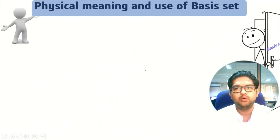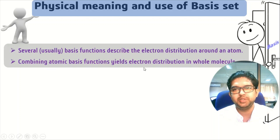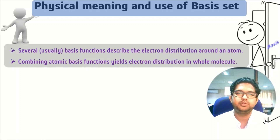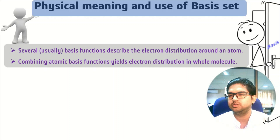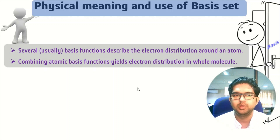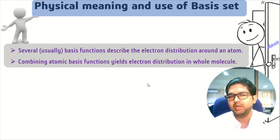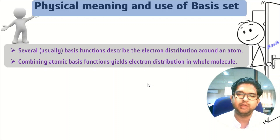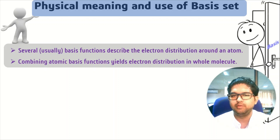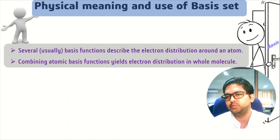The physical meaning of the basis set is that basis functions describe the electron density around an atom. By combining these atomic basis functions, we can describe the electron density and distribution across the whole molecule.